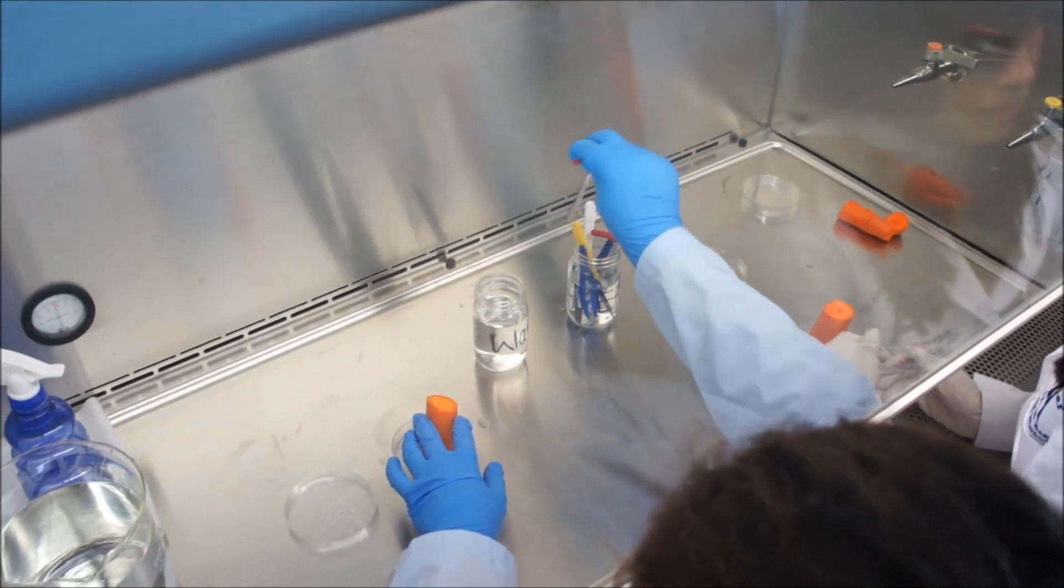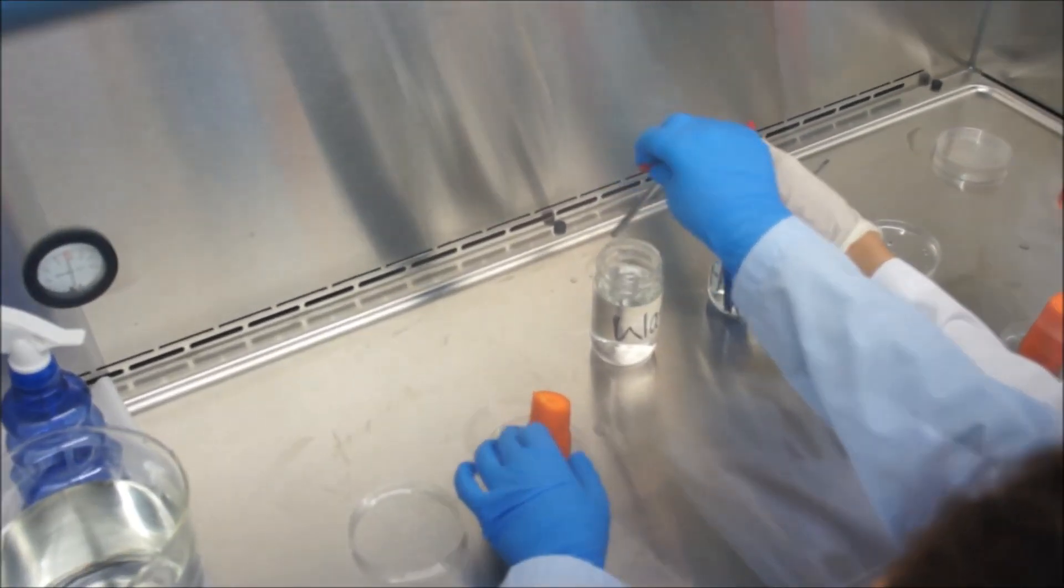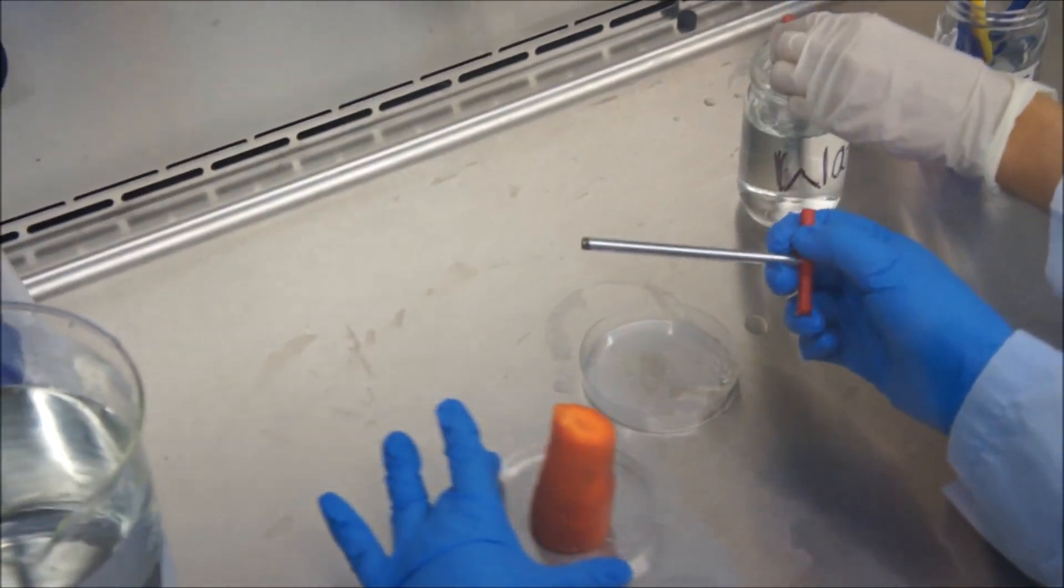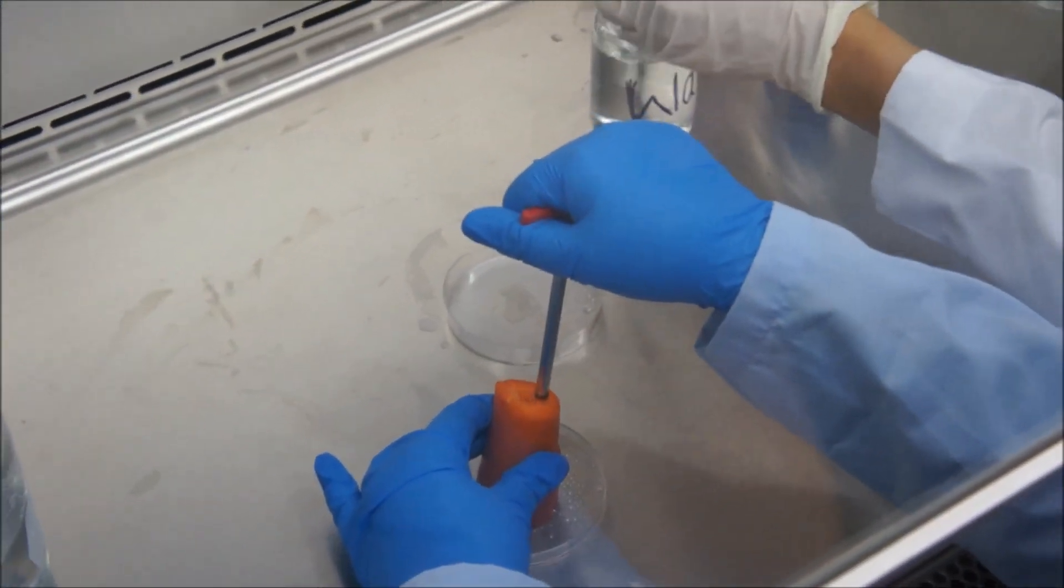Remove the cork borer from ethanol. Wash the cork borer by shaking in a tube with sterile water. Make sure the cork borer has been washed off with ethanol.